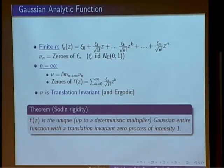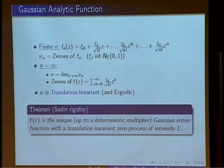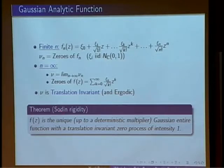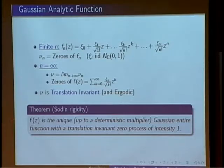It turns out this function, just up to scaling, is unique in that the zero process is unique up to translation and scaling. Any other Gaussian analytic function with the same zeros is related in a very simple way — just by multiplying by a function with no zeros. As Sodin calls it, Calabi rigidity — there is some vaguely related notion of rigidity due to Calabi, but I showed Sodin's theorem to Calabi and he completely disowned it, which is why we decided to call it by this name. He appreciated it but said it's not his.